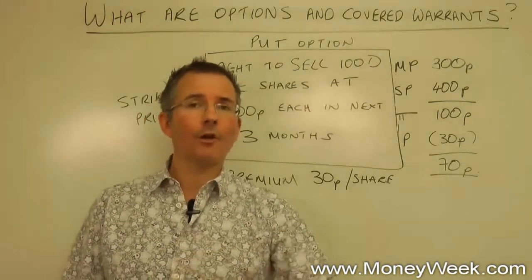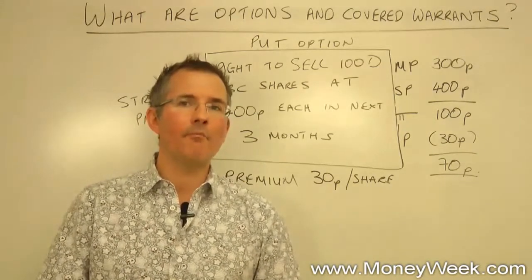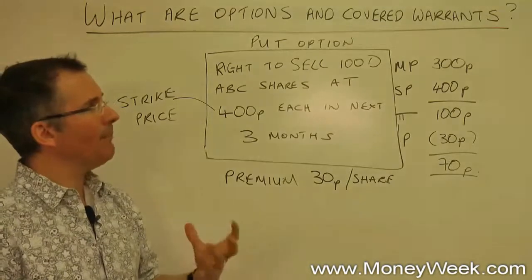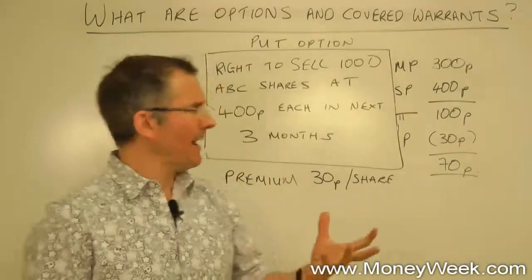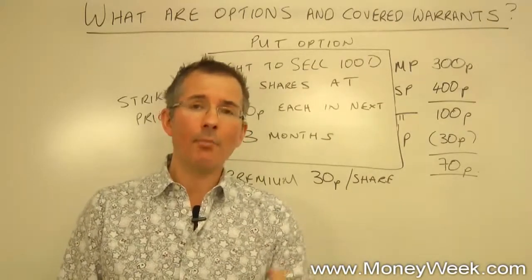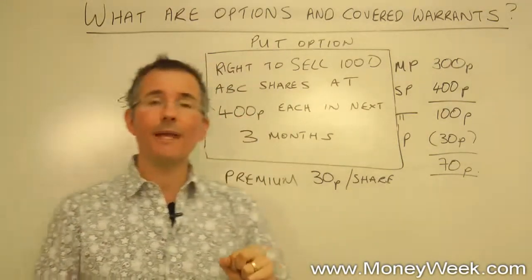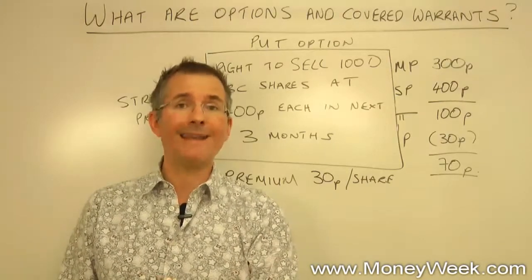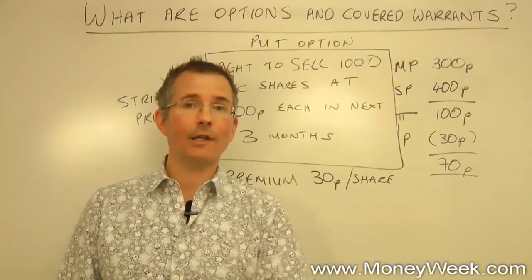So we have two basic types of option and covered warrant: the call and the put. Call options in the hands of the buyer are normally seen as bullish pieces of paper, and put options as bearish. You can use them to speculate — simply gamble on rising prices with a call option or falling prices with a put option. Or you could use them to protect yourself. If I'm holding a load of ABC shares and worried about the price falling but don't want to sell right now, a put option could be like an insurance contract — the right to sell these shares for 400 pence each if I need to. The premium I pay up front is kind of like a car insurance premium.